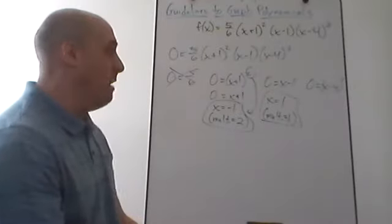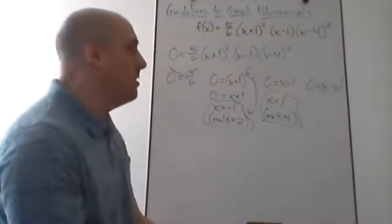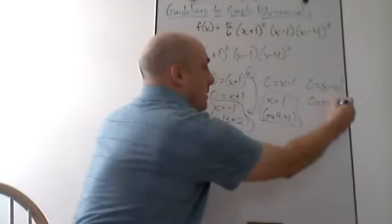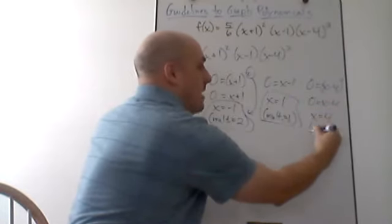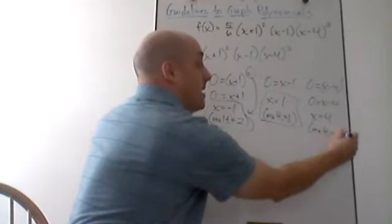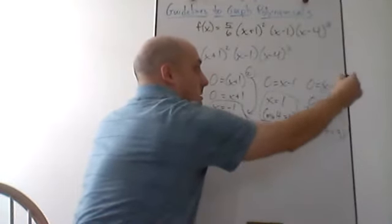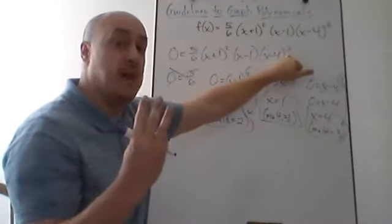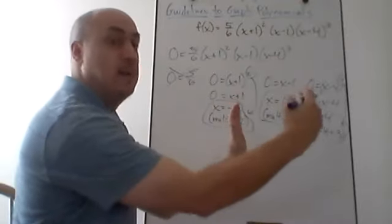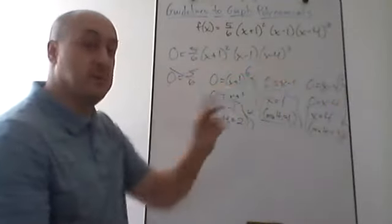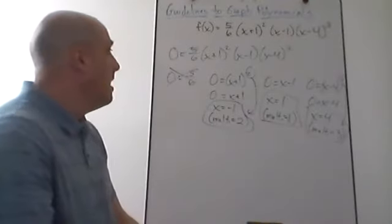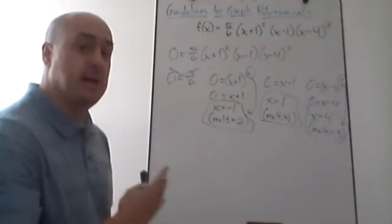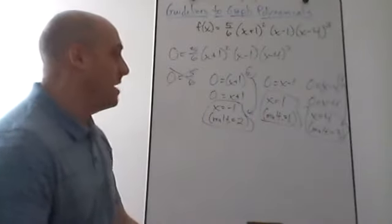From 0 = (x−4)³, again ignoring the exponent for solving purposes, we get x = 4, with a multiplicity of 3 because that factor appears three times. So our zeros and multiplicities are: x = −1 (multiplicity 2), x = 1 (multiplicity 1), and x = 4 (multiplicity 3). That completes step one.